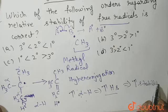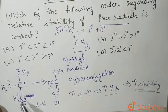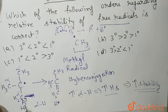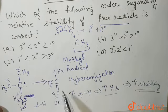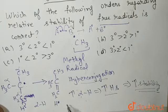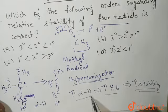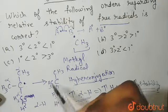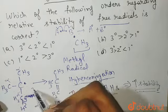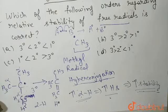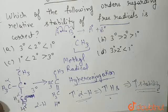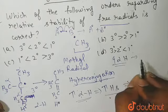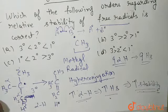This is similar to what happens with carbocations. Now, in this tertiary radical, how many alpha hydrogens are there? Three, three, and three — so total nine alpha hydrogens. Nine alpha hydrogens means nine hyperconjugating structures will be present in the tertiary radical.